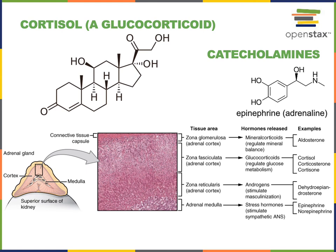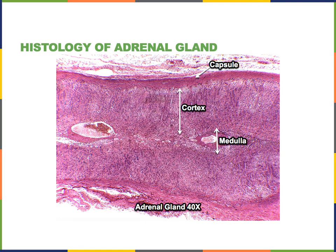In women, DHEA plays an important role during puberty, stimulating maturation of the hair follicles. The histology of the adrenal gland shows the deep layer — the adrenal medulla — which contains large blood vessels. The outer adrenal cortex contains the cells that produce steroid hormones, including cortisol. Surrounding the entire adrenal gland is a capsule of dense fibrous connective tissue, with a loose outer layer containing adipose tissue.